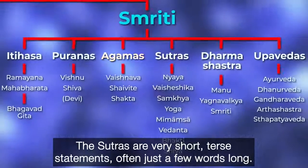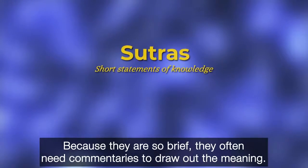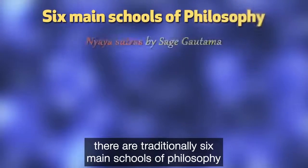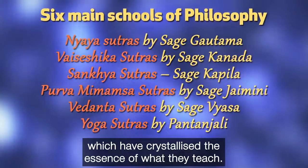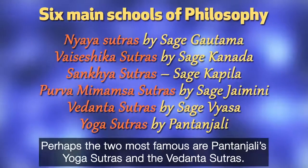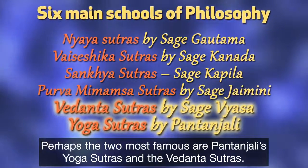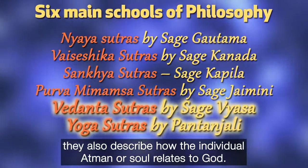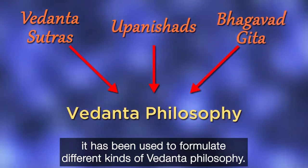The Sutras are very short, terse statements, often just a few words long. Because they are so brief, they often need commentary to draw out their meaning. There are traditionally six main schools of philosophy, and each of them have their own set of sutras which have crystallised the essence of what they teach. Perhaps the two most famous are Patanjali's Yoga Sutras and the Vedanta Sutras. The Vedanta Sutras are of particular interest — they describe how the individual Atman or soul relates to God, and together with the Upanishads and the Bhagavad Gita, they have been used to formulate different kinds of Vedanta philosophy.